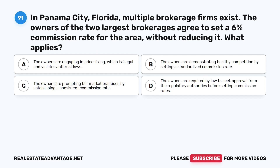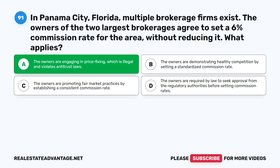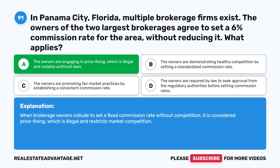Question 91: In Panama City, Florida, multiple brokerage firms exist. The owners of the two largest brokerages agree to set a 6% commission rate for the area without reducing it. What applies? A. The owners are engaging in price fixing, which is illegal and violates antitrust laws. B. The owners are demonstrating healthy competition by setting a standardized commission rate. C. The owners are promoting fair market practices by establishing a consistent commission rate. D. The owners are required by law to seek approval from regulatory authorities before setting commission rates. The correct answer is A. When brokerage owners collude to set a fixed commission rate without competition, it is considered price fixing, which is illegal and restricts market competition.